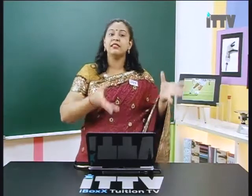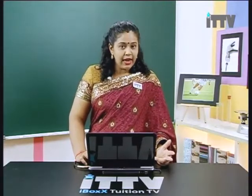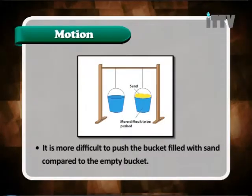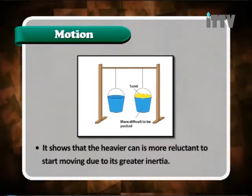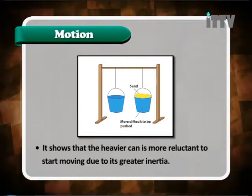The empty container has less mass — the only mass it carries is its own weight, the container's weight. The container that contains sand has more mass, as the sand is a mass particle inside it. The manipulated variable here is the different amount of mass in these two containers. It is more difficult to push the bucket filled with sand compared to the empty bucket. This shows that the heavier container is more reluctant to start moving due to its greater inertia.